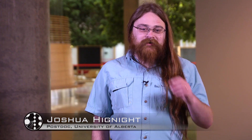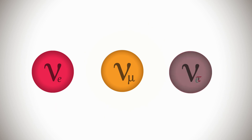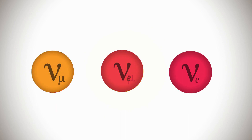Neutrino oscillations in their simplest form is one type of neutrino changing into another type. We have three basic types: an electron neutrino, a muon neutrino, and a tau neutrino. They have this very special quantum mechanical property that as they travel through space they have the ability to go from one flavor to another.